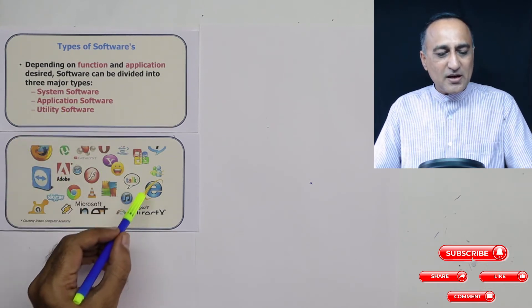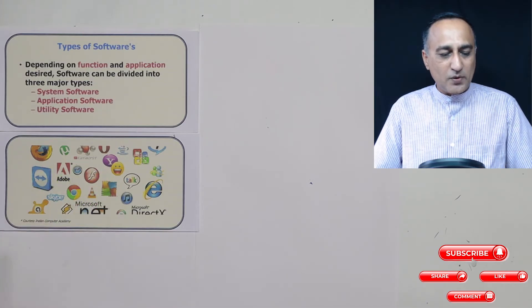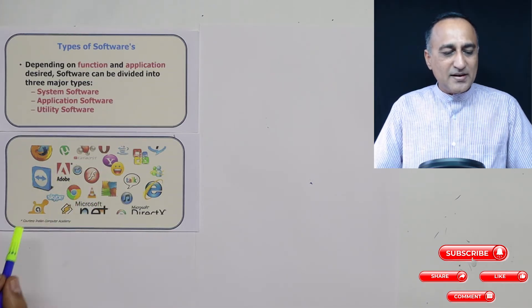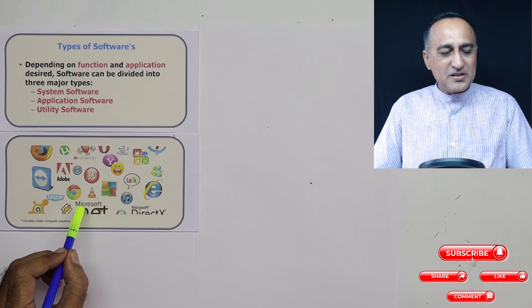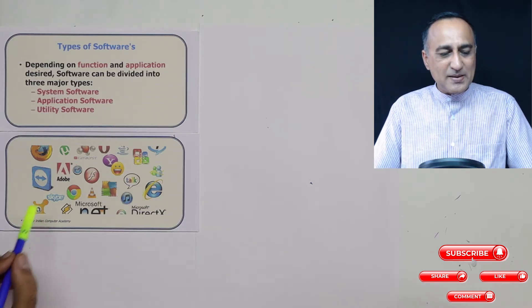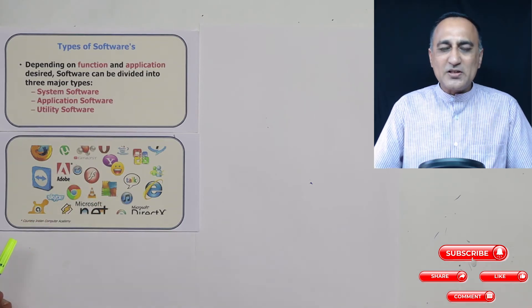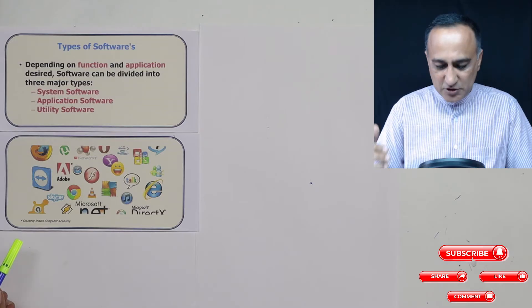Here I'm showing you a collection of different software examples. Microsoft Windows is an example of system software, while Skype is an example of application software. These distinctions will become clearer once we try to differentiate them.